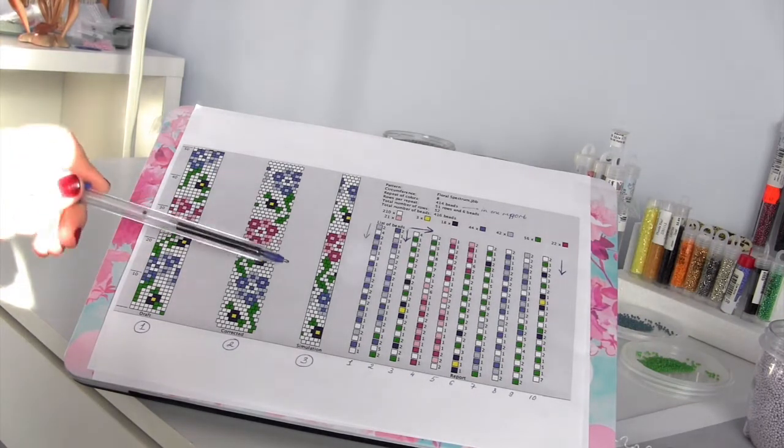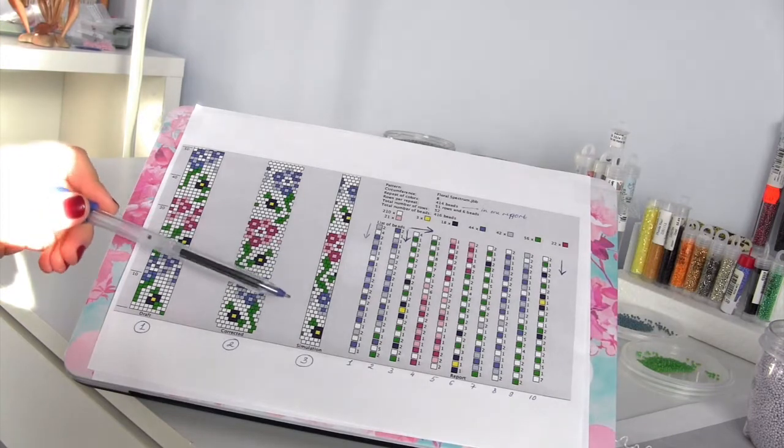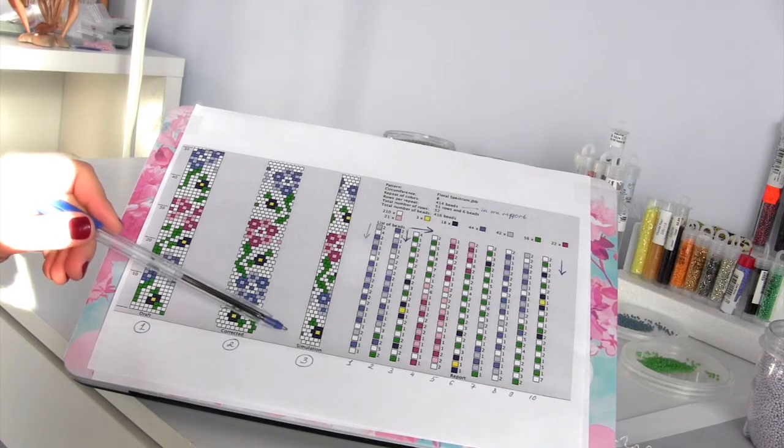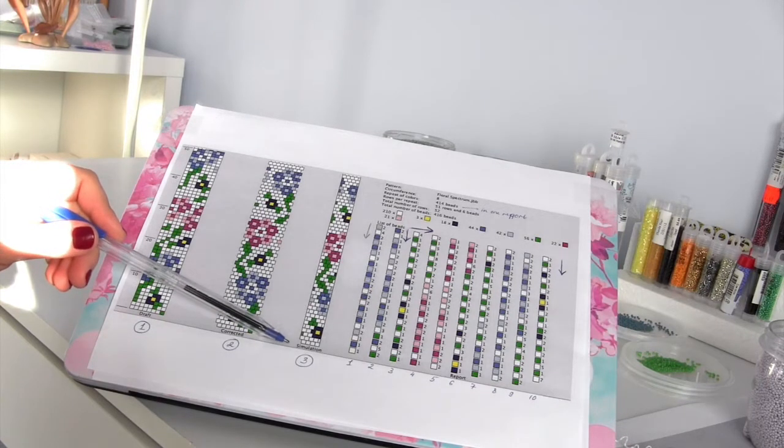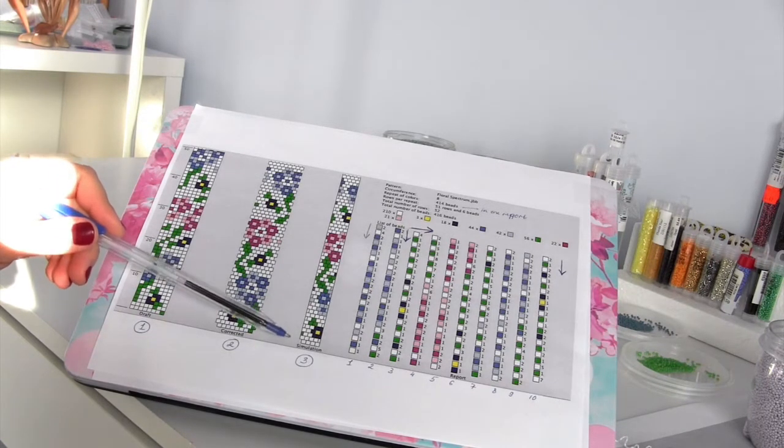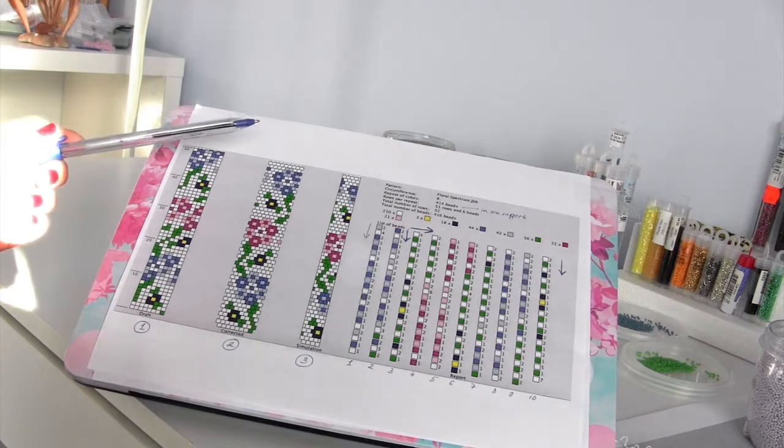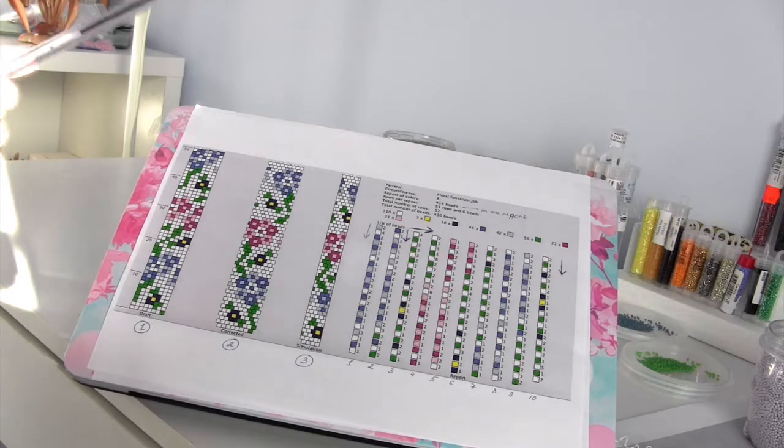The third one is the most important because we usually look at the third column just to see how the pattern will look like. And based on that, if we like it we'll choose the scheme. If we don't then we'll go to another one.